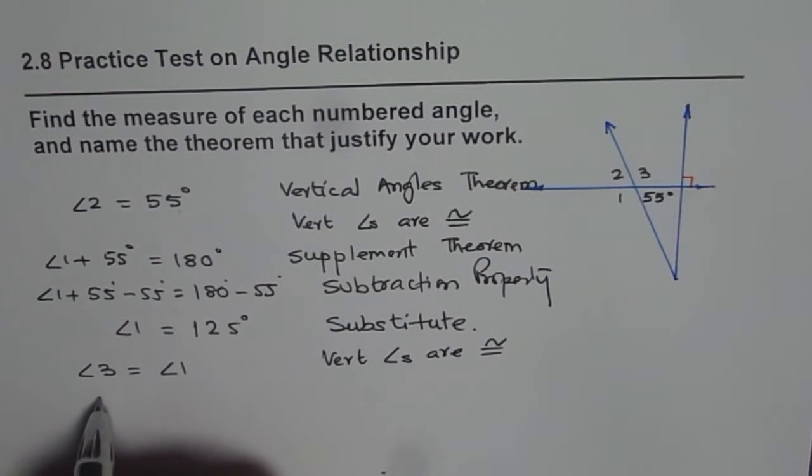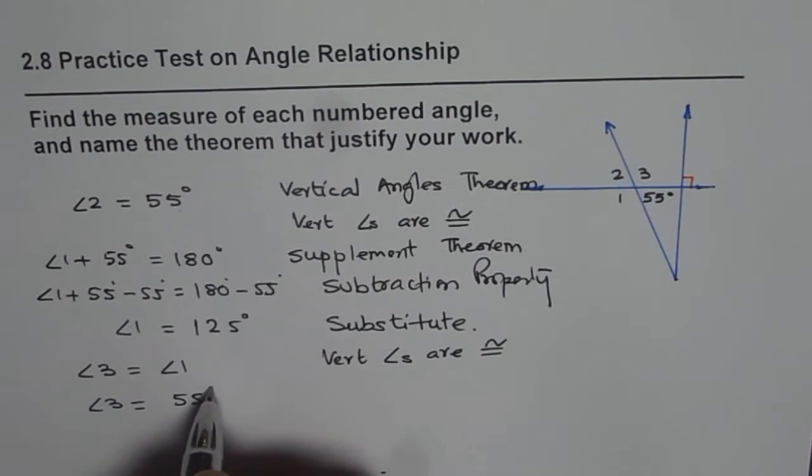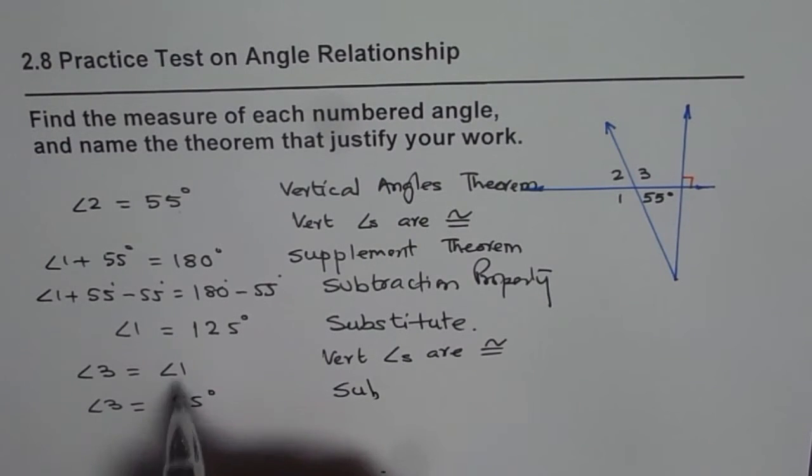And therefore, we have angle 3 is equal to 55 degrees. So angle 3 is equal to 55. We substitute the value of 1.